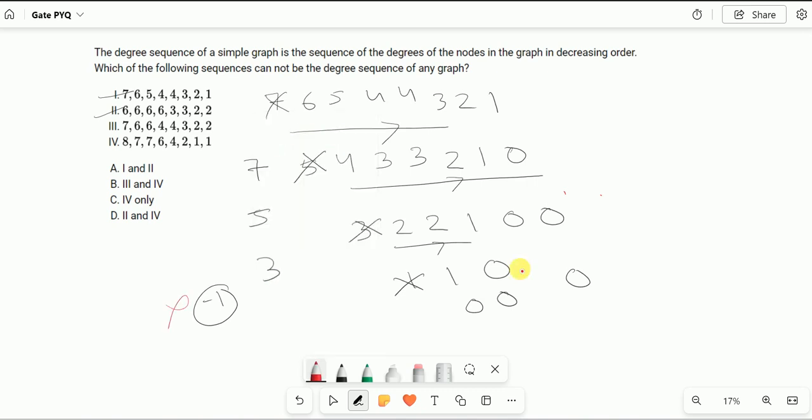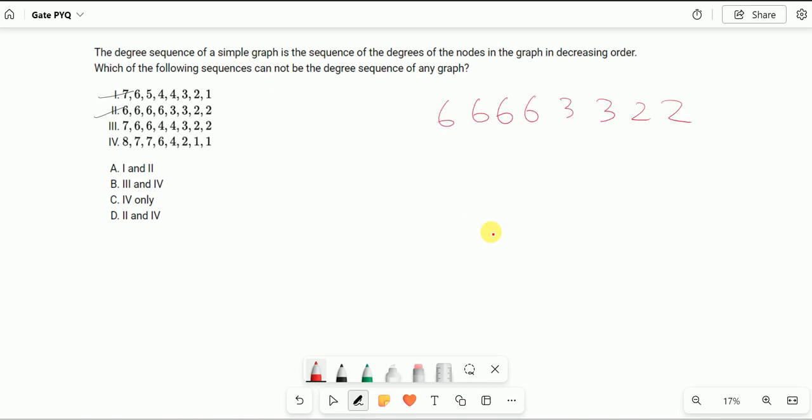Now I will take the second example. We have here 6, 6, 6, 3, 3, 2, 2, 2. Take out this 6, subtracting 1, so 5, 5, 5, 2, 2, 1, 1. Then 4, 4, 1, 1, 0, 1.